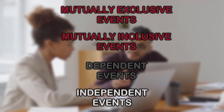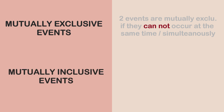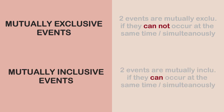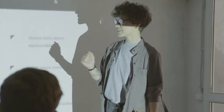Two events are said to be mutually exclusive if they cannot occur simultaneously — that is, they cannot occur at the same time. Events are said to be mutually inclusive if they can occur simultaneously — that is, they can occur at the same time.